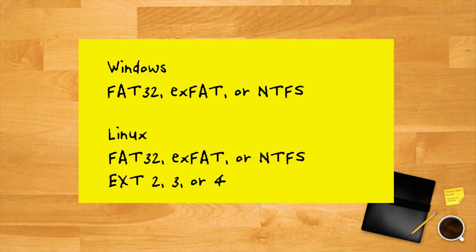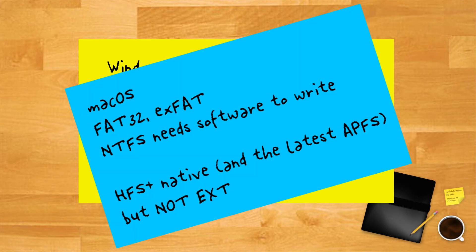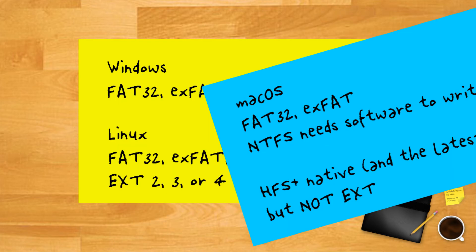If you will be using the drive on Linux devices only, you can add its native EXT 2, 3, or 4 to the mix. As for macOS, you can natively run FAT32; it works with exFAT too, but you need additional tools for NTFS, and its native file system is HFS Plus and the latest APFS, not EXT. As you can see, FAT32 and to some extent NTFS are present on all major operating systems, though they're not interchangeable and have their differences as we will explain next.